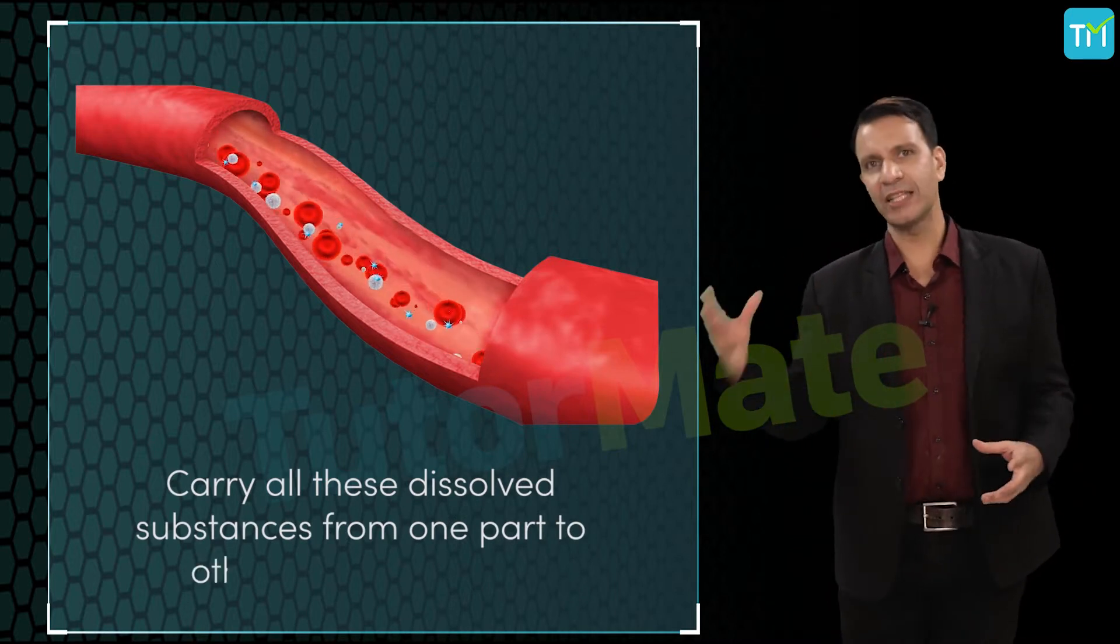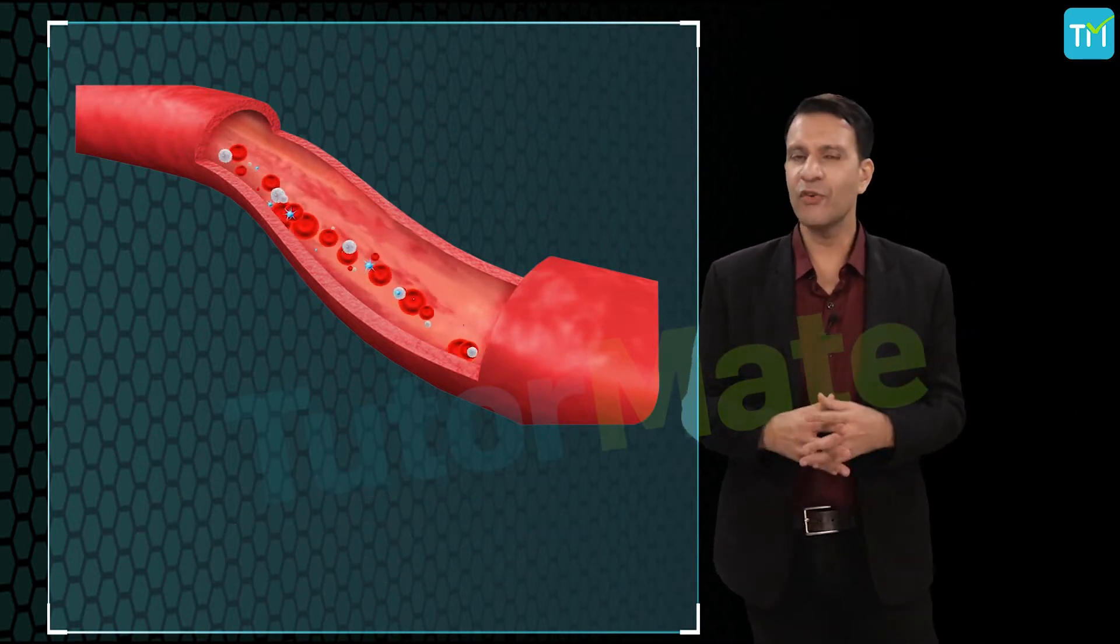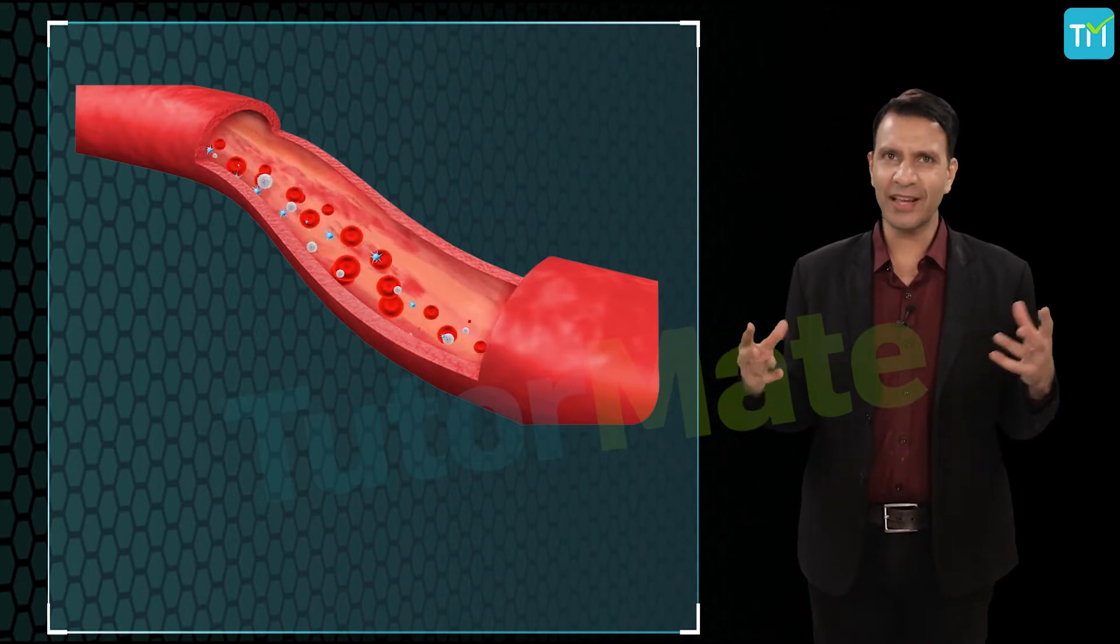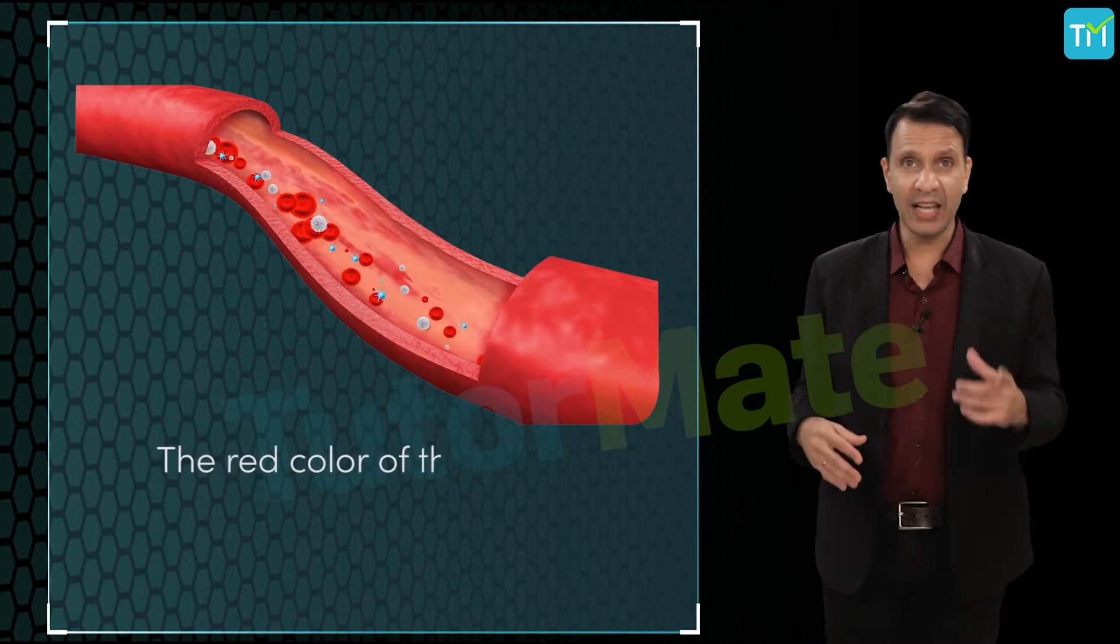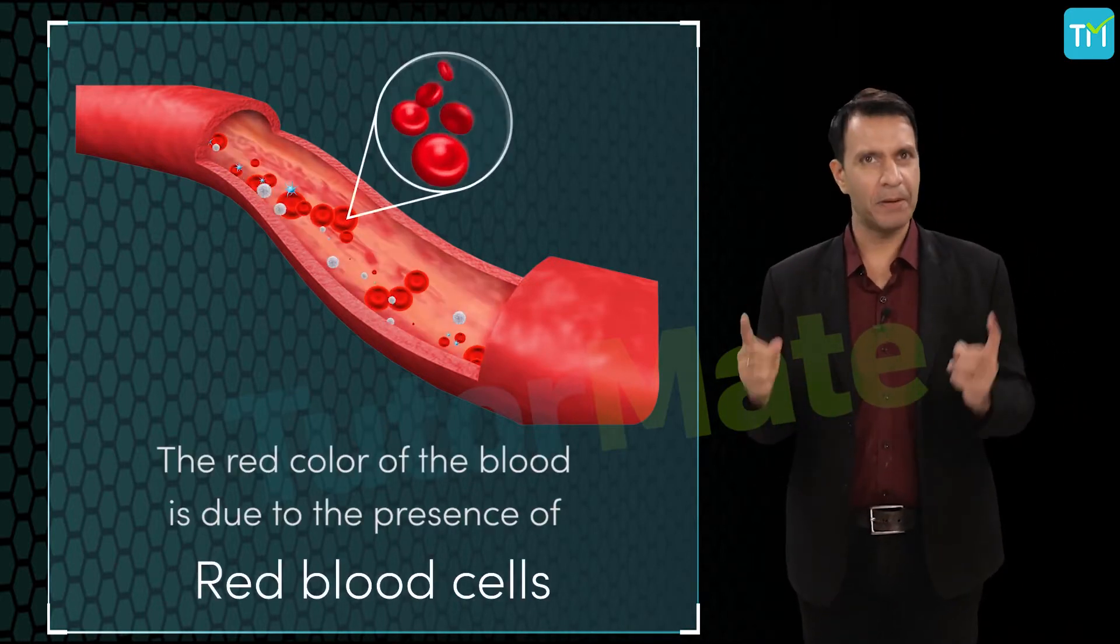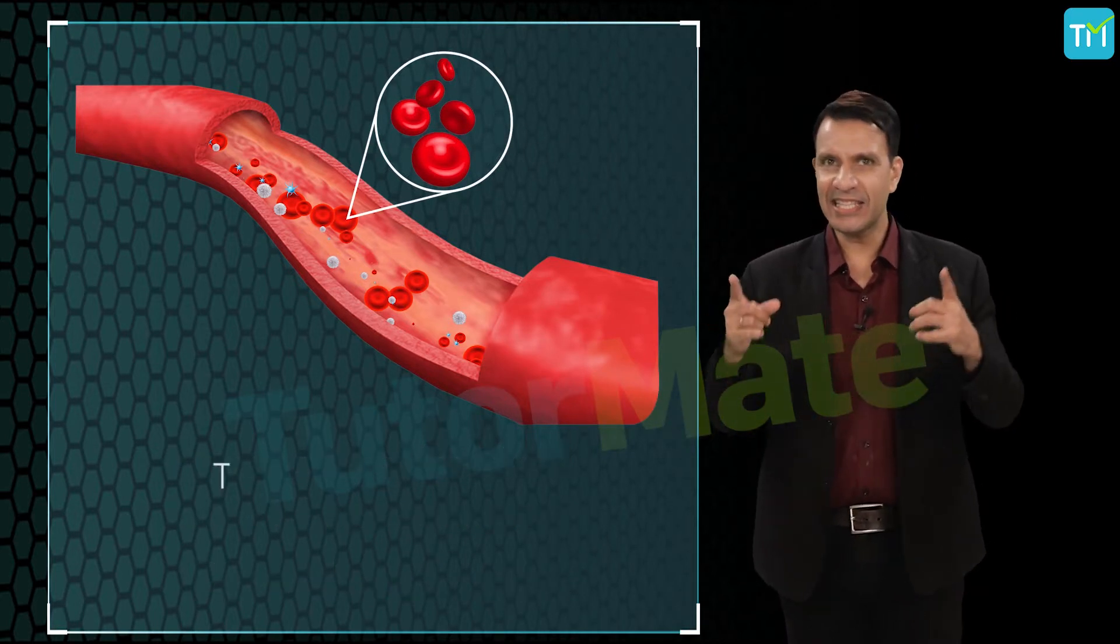So if plasma is a colorless liquid, what gives blood its red color? The red color of the blood is due to the presence of red blood cells, and these cells are red due to the presence of a red pigment called hemoglobin.